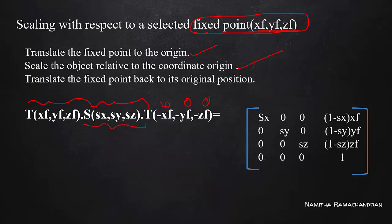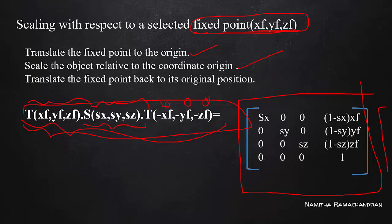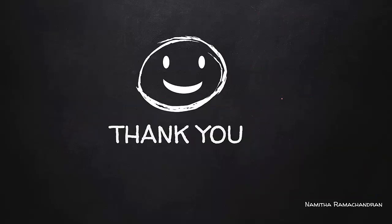The resulting composite transformation matrix for scaling with respect to a fixed point is: [sx, 0, 0, (1-sx)*xf / 0, sy, 0, (1-sy)*yf / 0, 0, sz, (1-sz)*zf / 0, 0, 0, 1]. This is the three-matrix composite transformation result. We can multiply any object point by this matrix to get the scaled position. For the next video, we will see the 3D rotation. Thank you.